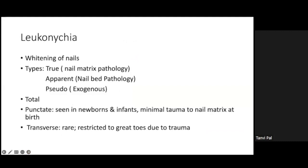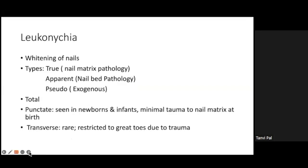Leukonychia is a whitening of the nail. There are various types: true leukonychia, which involves nail matrix pathology; apparent leukonychia, which is nail bed pathology; and pseudo-leukonychia, which is exogenous. Total leukonychia involves the whole nail plate turning white. Punctate leukonychia is commonly seen in newborns and infants and is caused by minimal trauma to the nail matrix at birth. A common myth is that parents attribute these white changes to calcium or vitamin D deficiency.